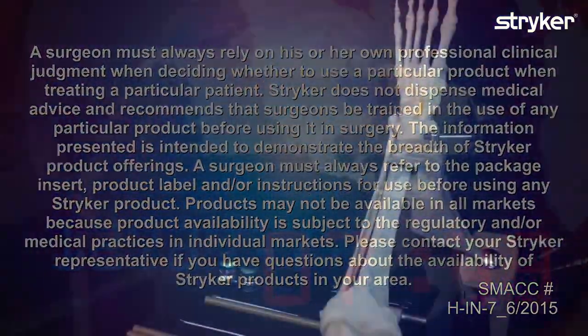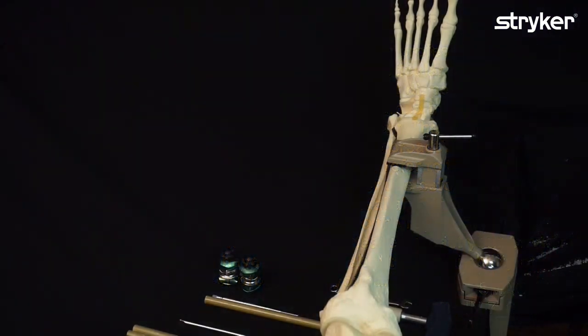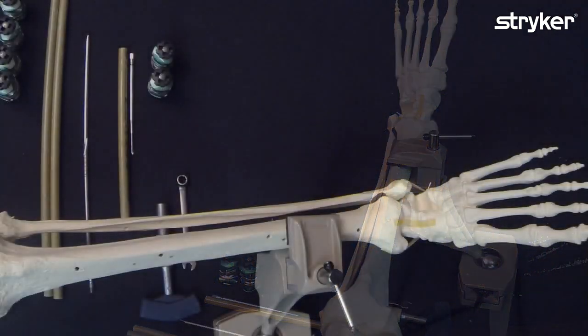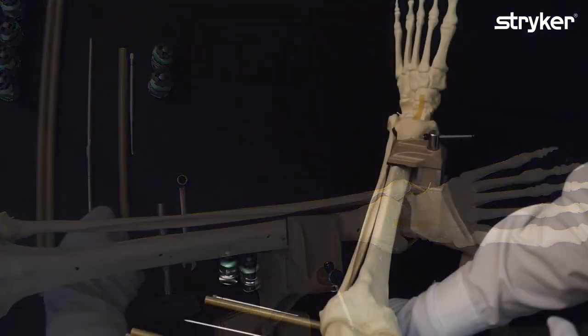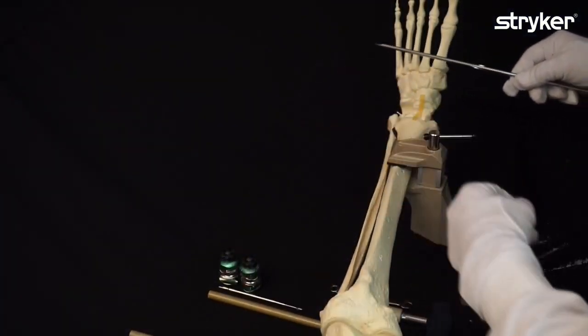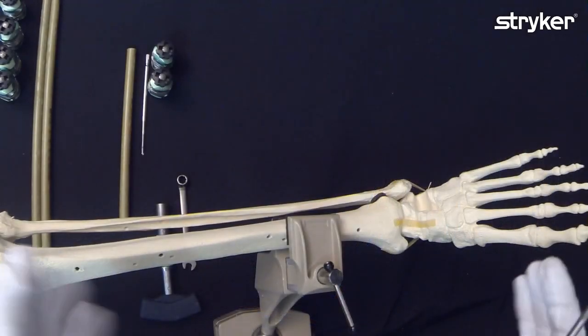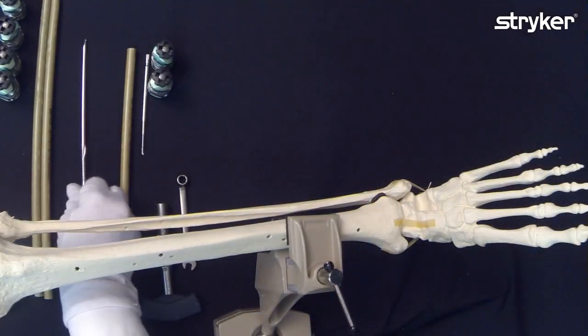Hello and welcome to another edition of our Hoffman 3 knowledge series. I'm going to show you a couple of different ankle frames today, and the first one would be one with a single pin in the calcaneus and a two pin construct in the tibia to distract that fractured ankle.